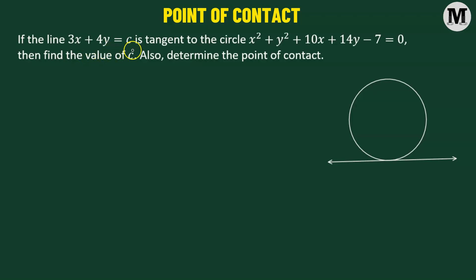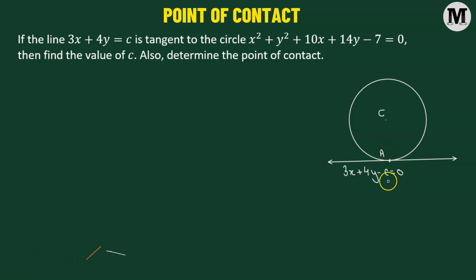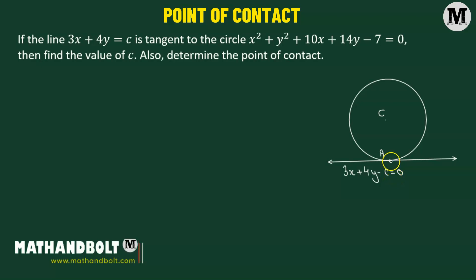If the line 3x plus 4y equals c is tangent to the circle, find the value of c and also determine the point of contact. We have a circle centered at C and a line with equation 3x plus 4y minus c equals 0. This line is tangent to the circle at point A. Our goal is to find the value of the constant c as well as the coordinates of point A.